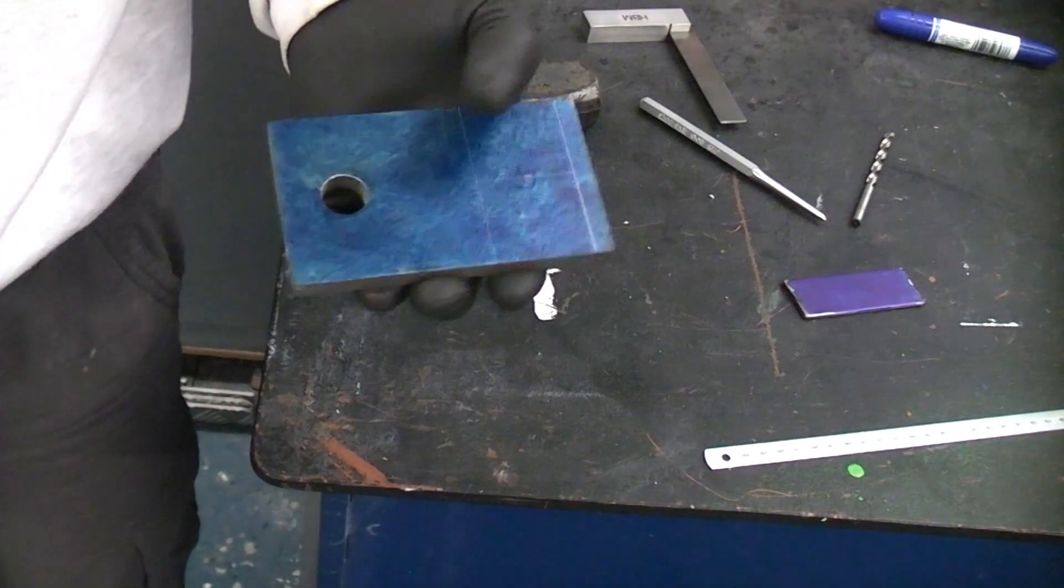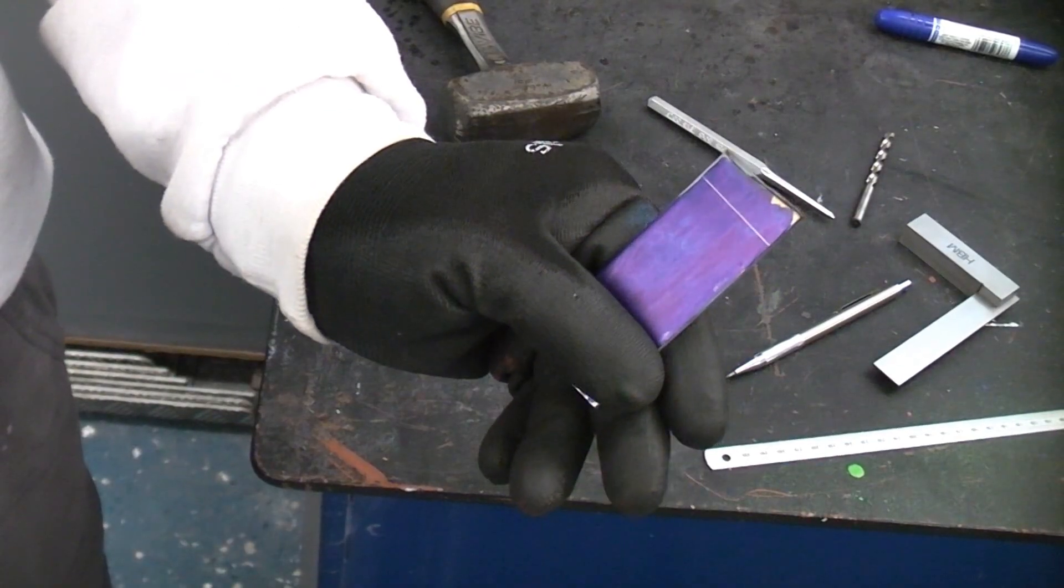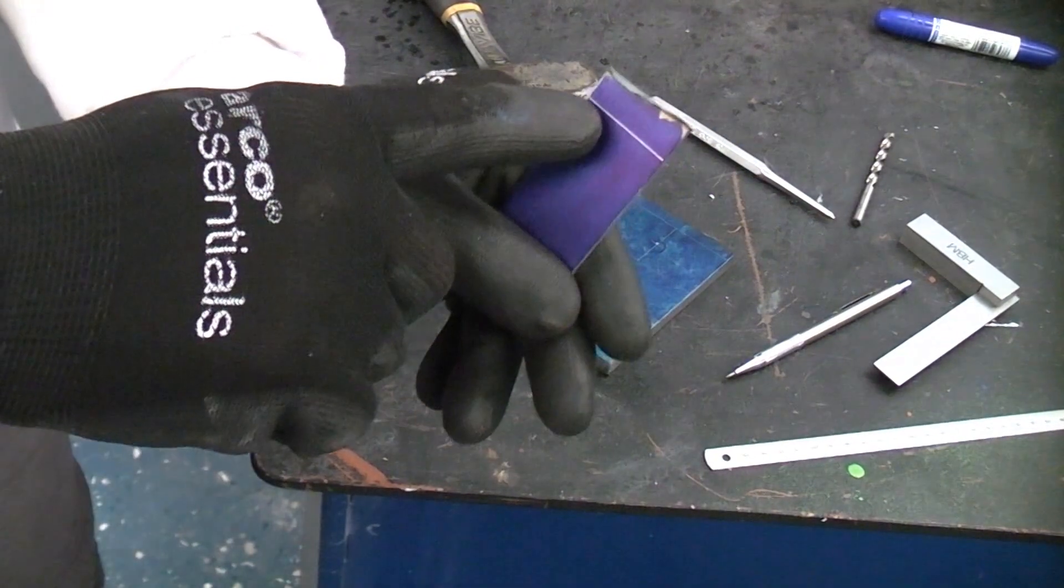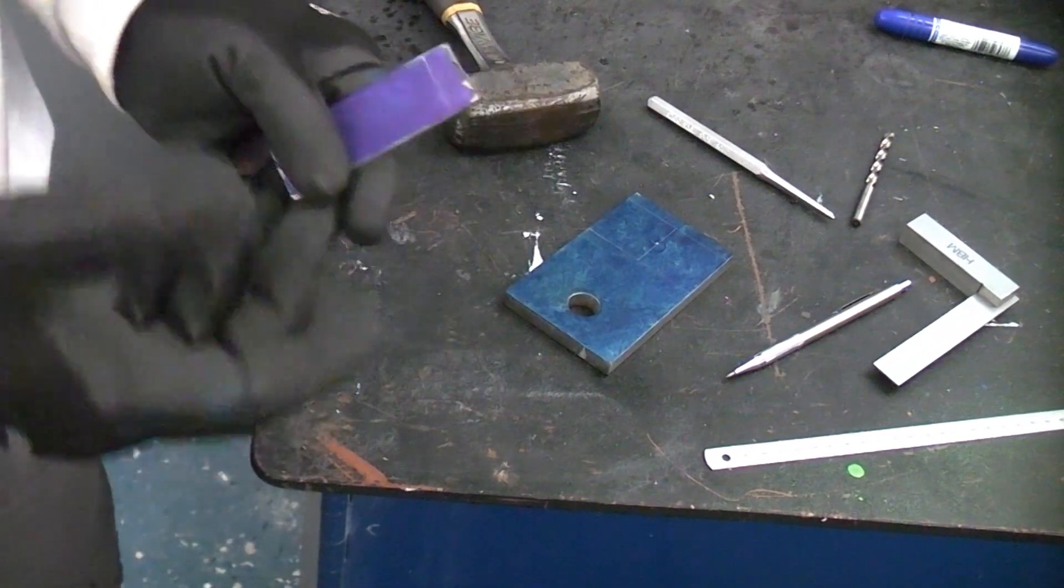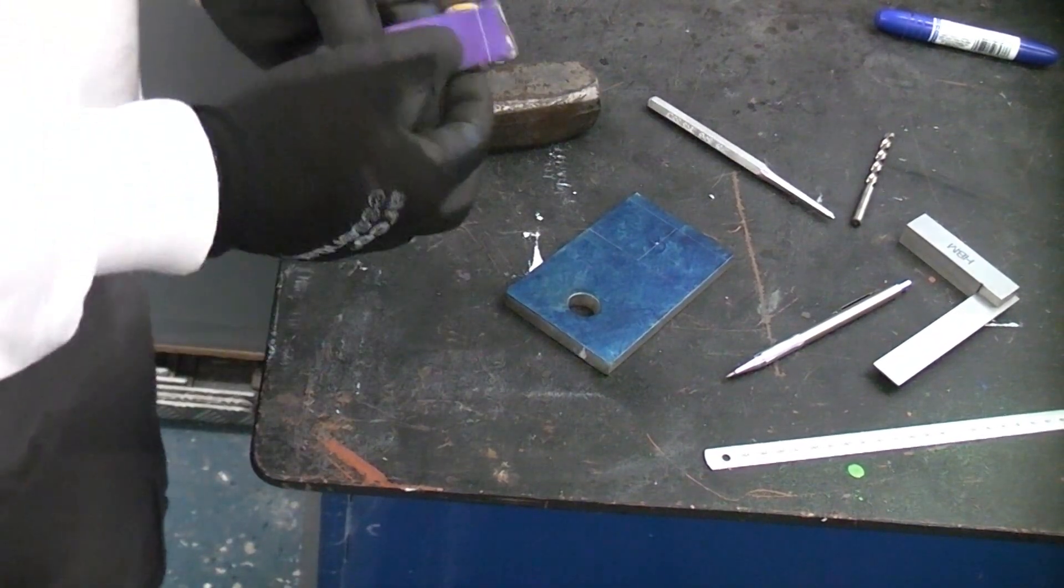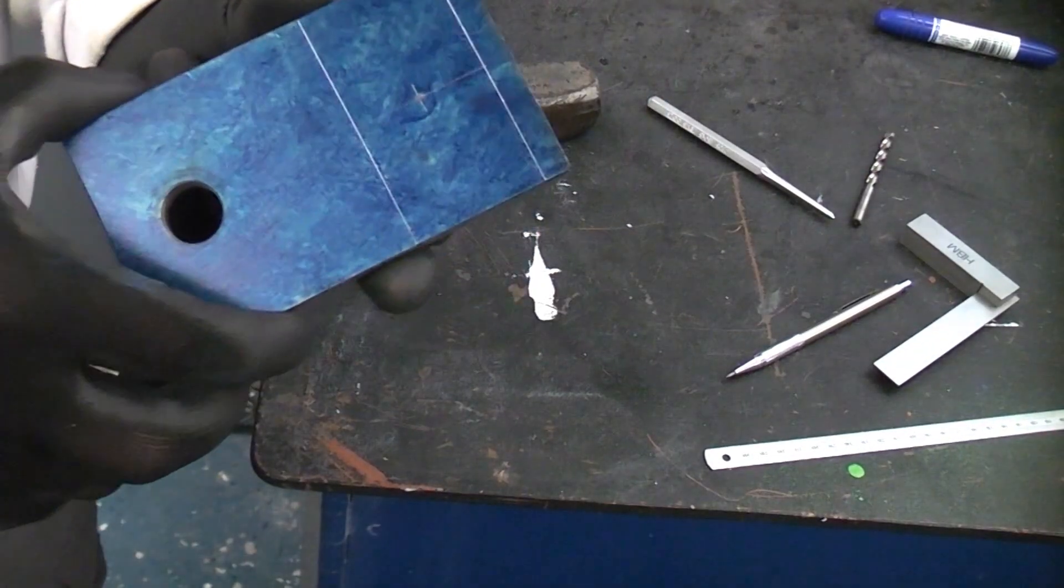Basically that is how you mark out a piece of metal. I've just scribed the line on the piece that we covered with the permanent marker and you can see the line is scribed on there very clearly. So by colouring in the metal using engineer's marking fluid or a permanent marker you can see the marking out lines very clearly.